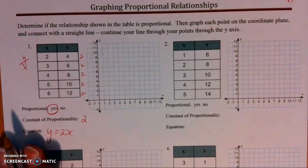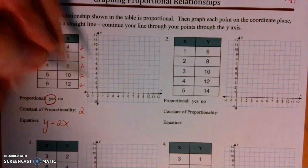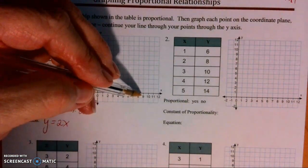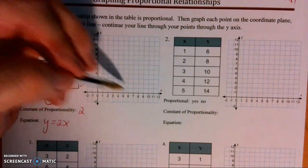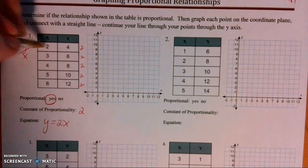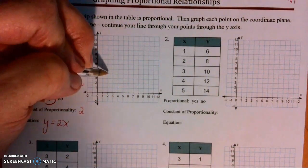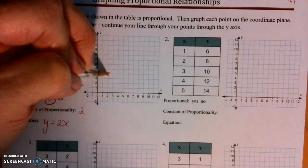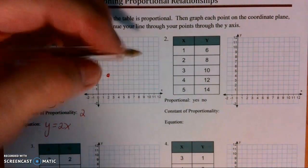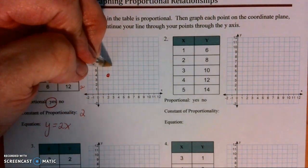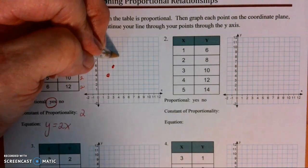Now I'm going to graph this chart. Remember, the horizontal line is your x — you always move horizontally first and then up for the vertical. My first point is (2, 4): go over 2, up 4, and put a dot where those two intersect. My next point is (3, 6), then (4, 8).